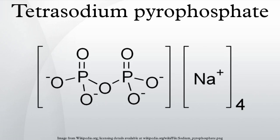Tetrasodium pyrophosphate, also called sodium pyrophosphate, tetrasodium phosphate, or TSPP, is a colorless transparent crystalline chemical compound with the formula Na₄P₂O₇. It is a salt composed of pyrophosphate and sodium ions. Toxicity is approximately twice that of table salt when ingested orally. There is also a hydrated form, Na₄P₂O₇·10H₂O.